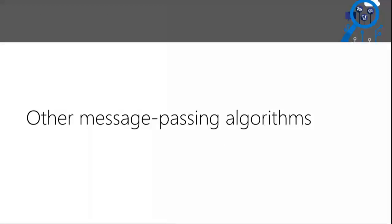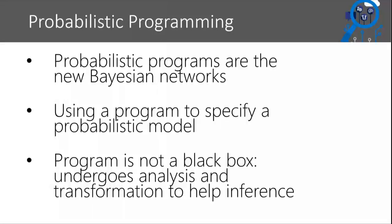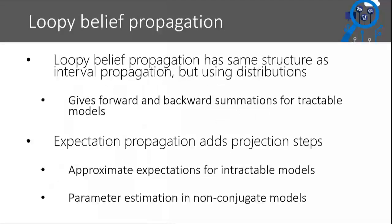There are other message passing algorithms, and a lot of them center around probabilistic programming. I like to draw an analogy between probabilistic programming and AD: just as programs are the new formulas for AD, probabilistic programs are the new Bayesian networks for probabilistic machine learning. Instead of thinking of a problem as a Bayesian network, you should almost always think about it as a program - you get the same benefits: not only a more compact input, but after transformation to do inference, it has the same size. One well-known message passing algorithm for probabilistic programs is loopy belief propagation.